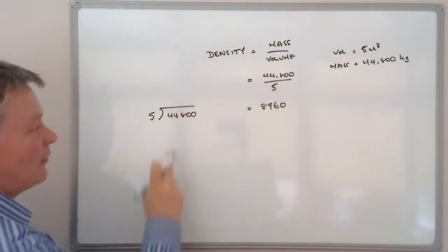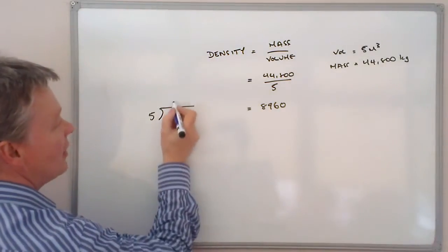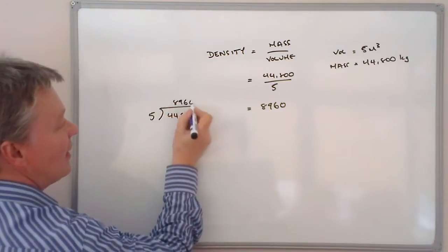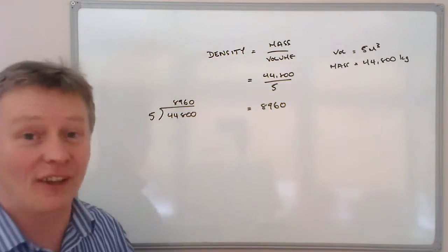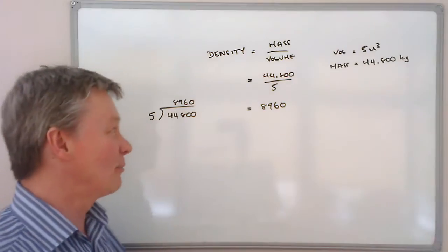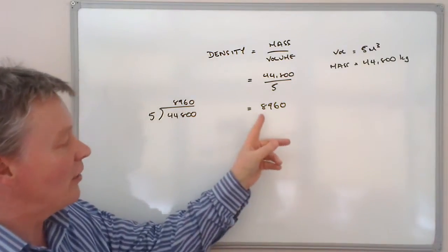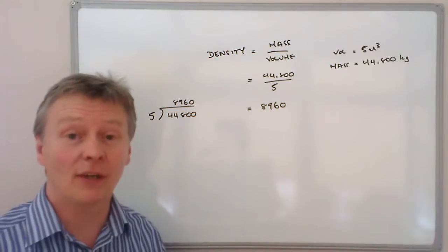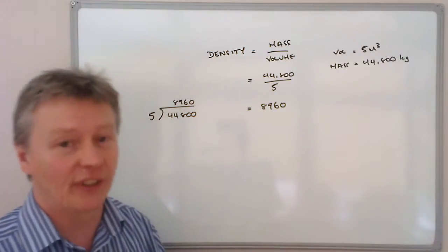44,800 divided by 5 is 8960 and you might want to just check that by using that calculation a little bit later. So 8960 is OK and that will give you a mark for the calculation.